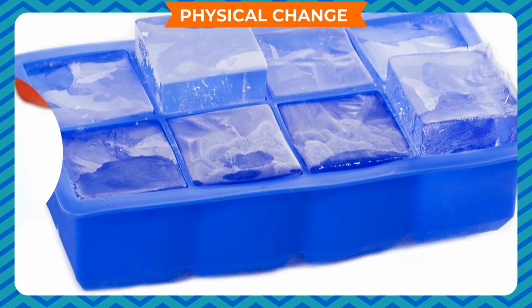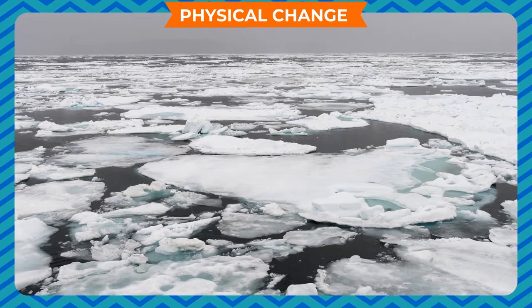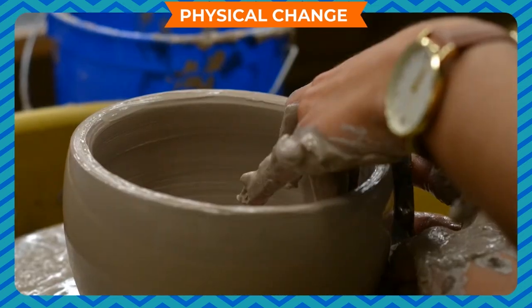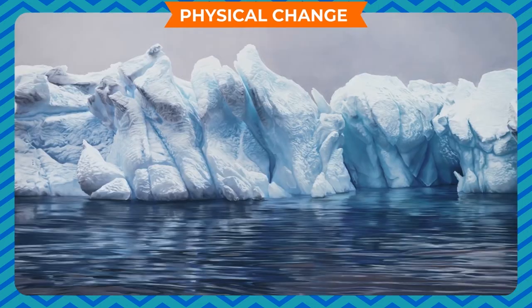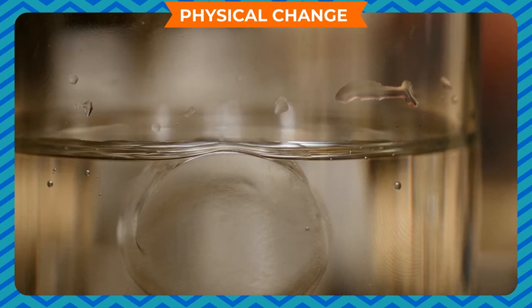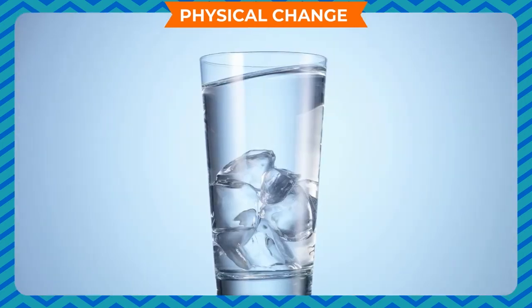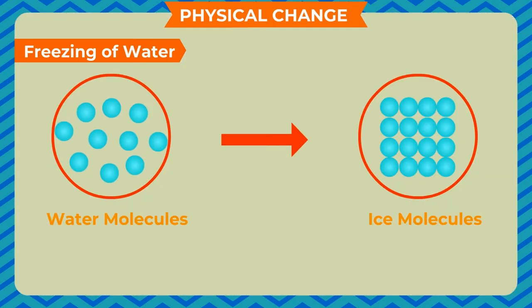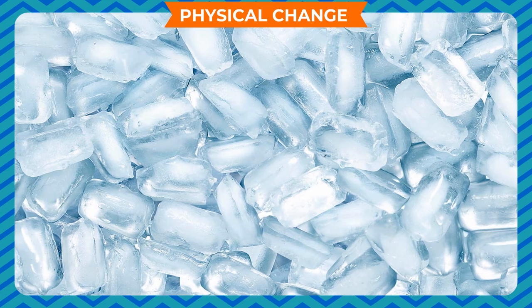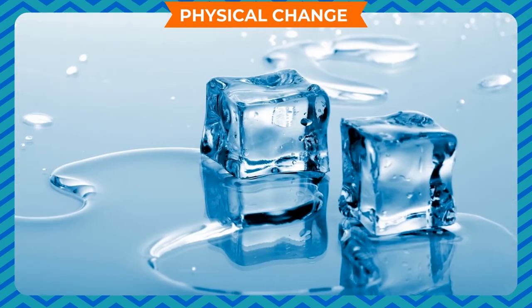Physical change: a physical change is a temporary change in which no new substance is formed. It is easily reversible and the composition of the substance does not change — the substance only undergoes a change in its shape, size, appearance, or state. Internally, substances remain the same before and after the change. For example, freezing of water: when heat energy is extracted from water, the energy of its molecules decreases, restricting their movement. This gives them a stable and fixed shape, converting them into ice — a process known as freezing, which is reversible in nature.